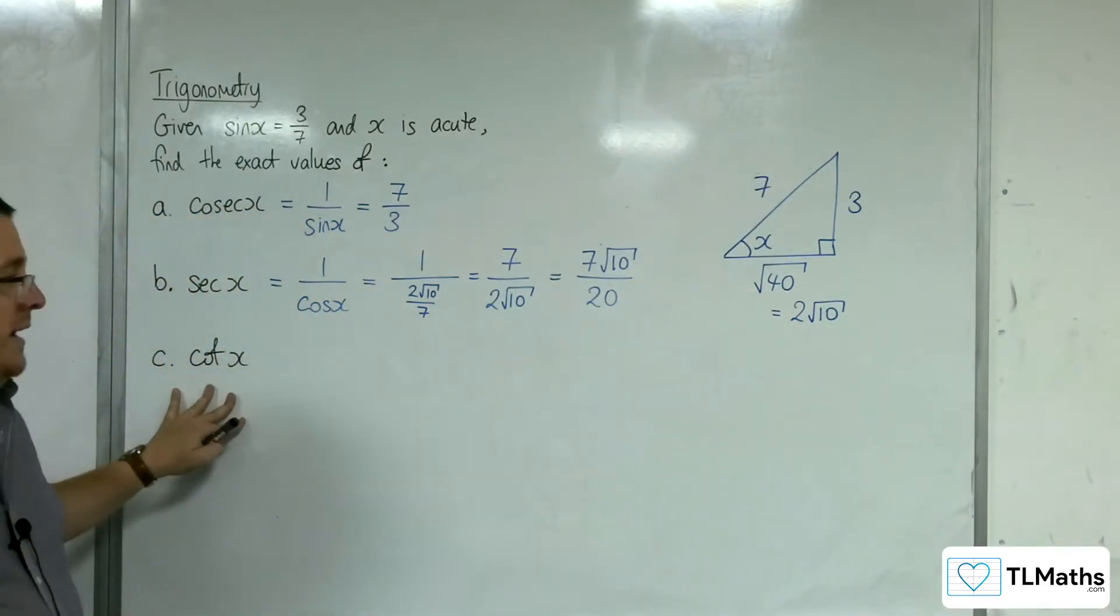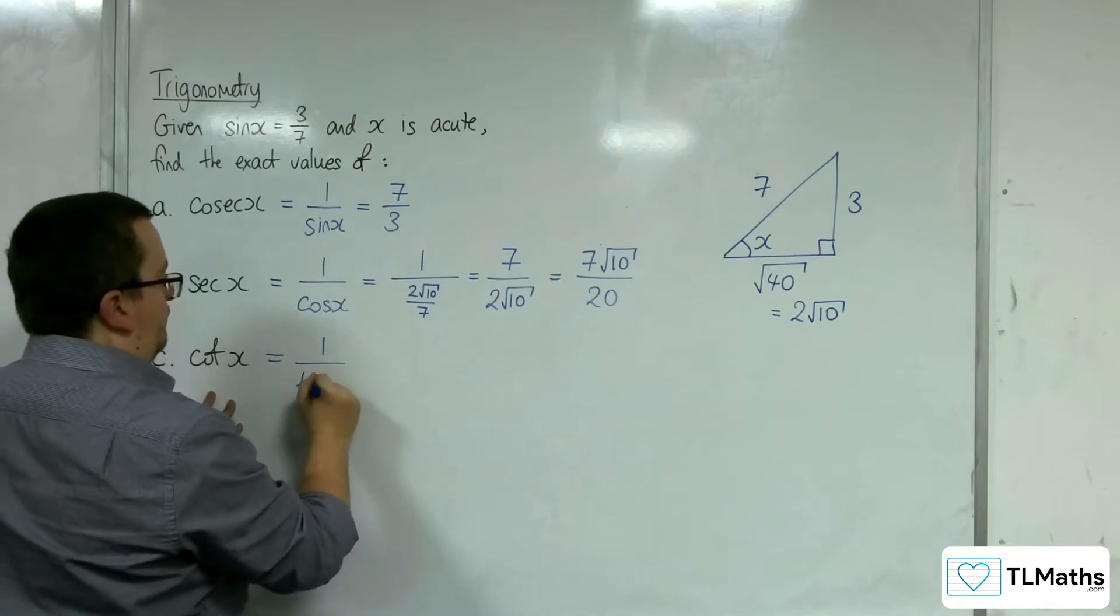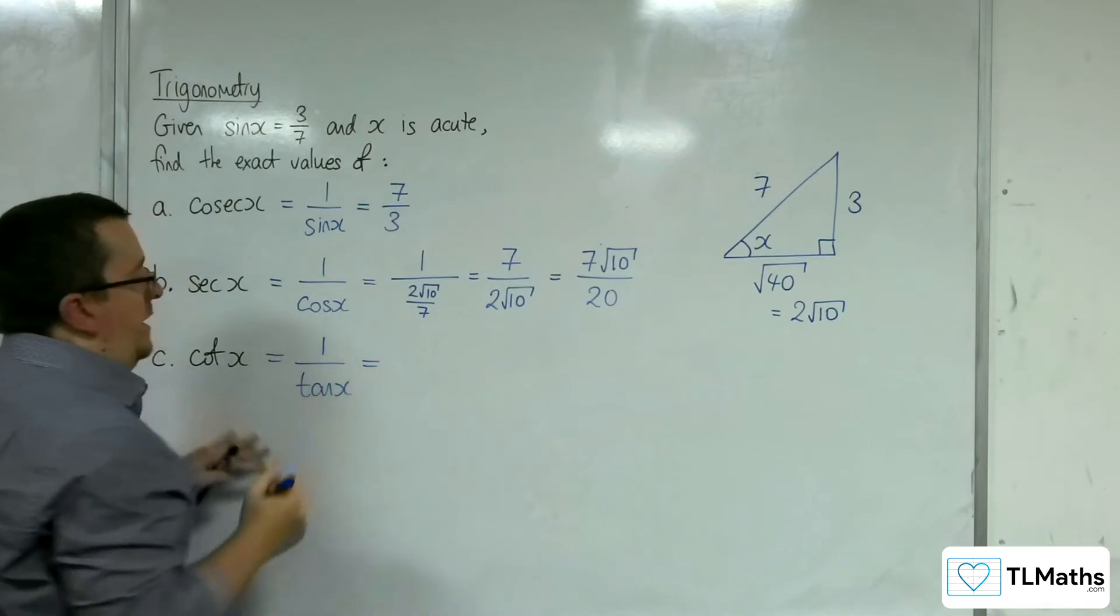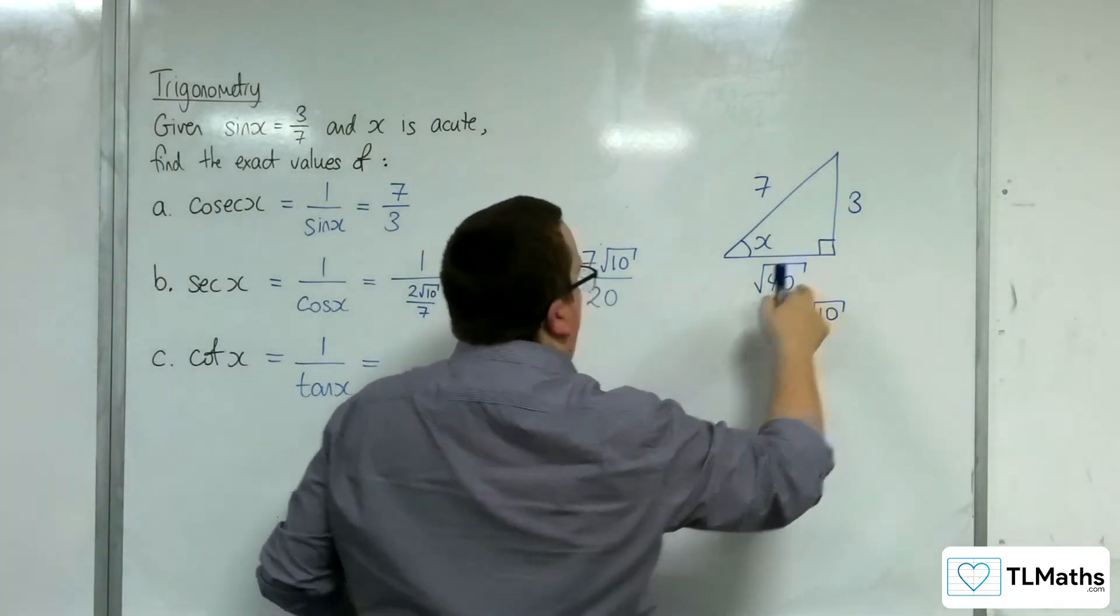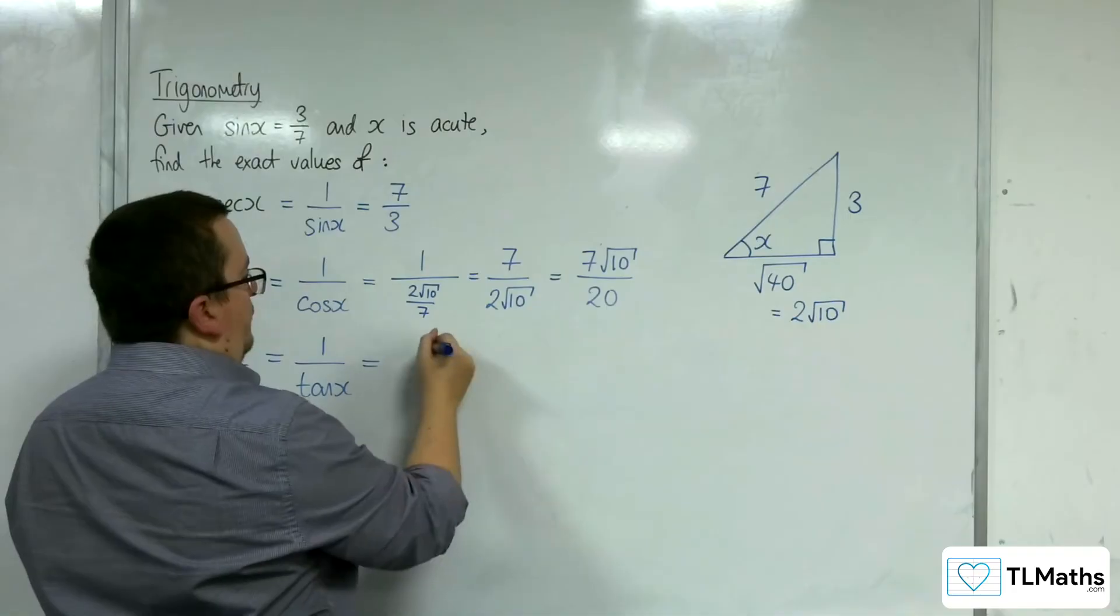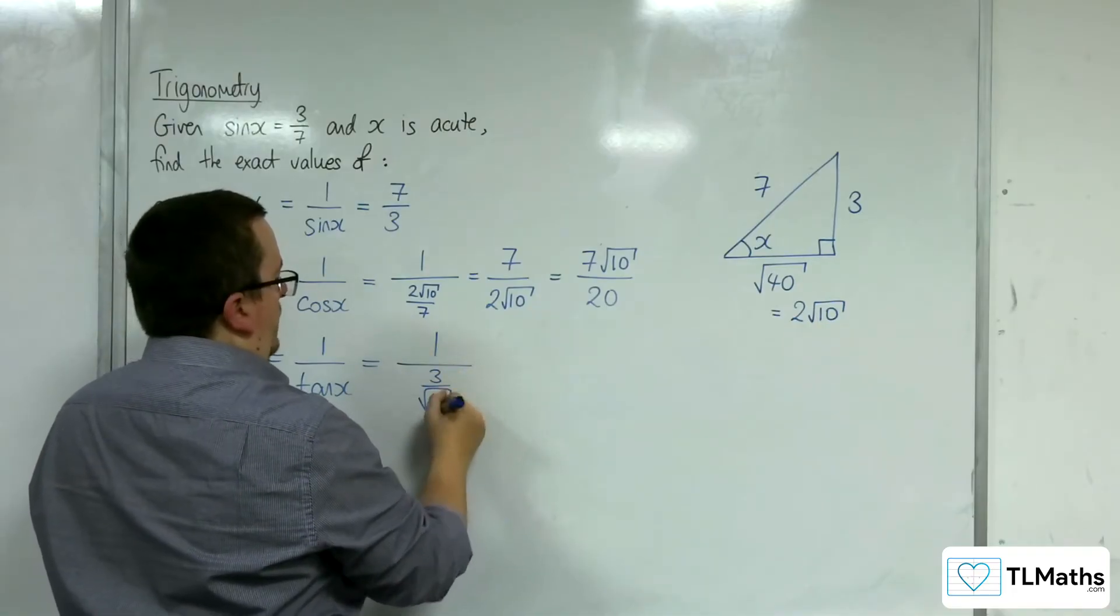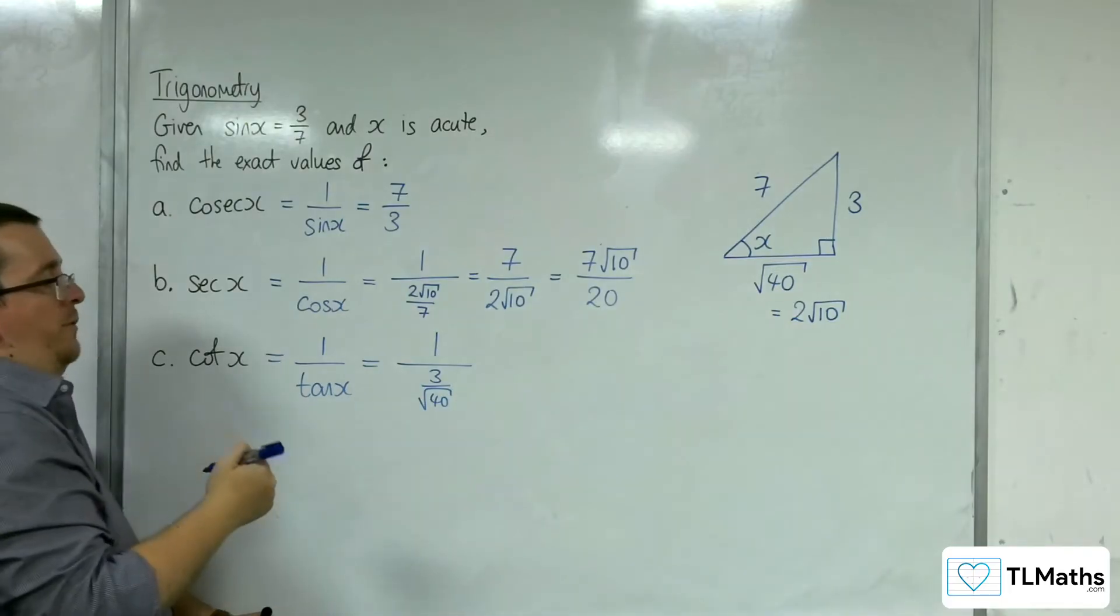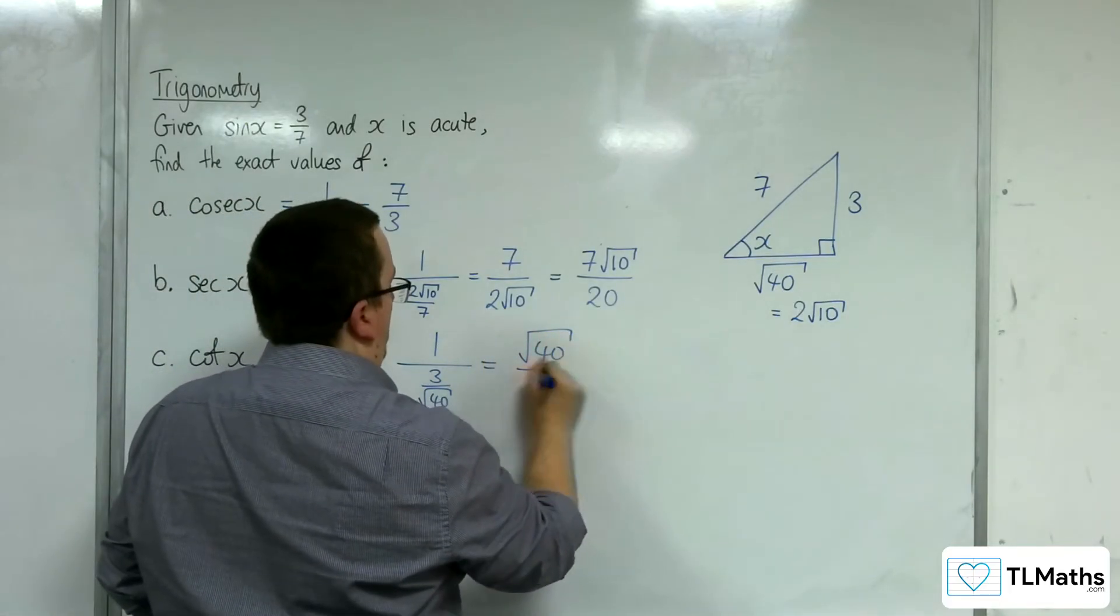As for cot x, we know that is 1 over tan. Tan is opposite over adjacent, so 3/√40. Therefore, cot is the reciprocal, √40/3.